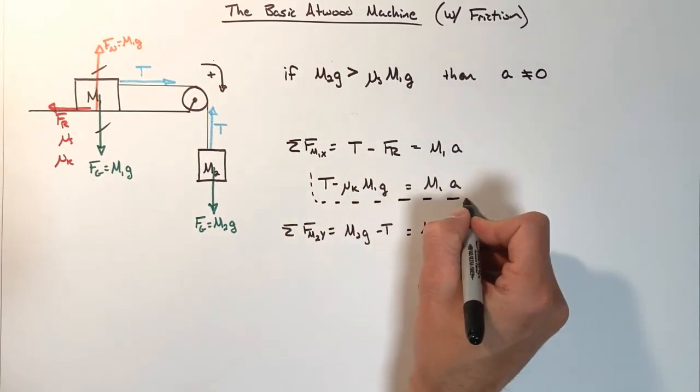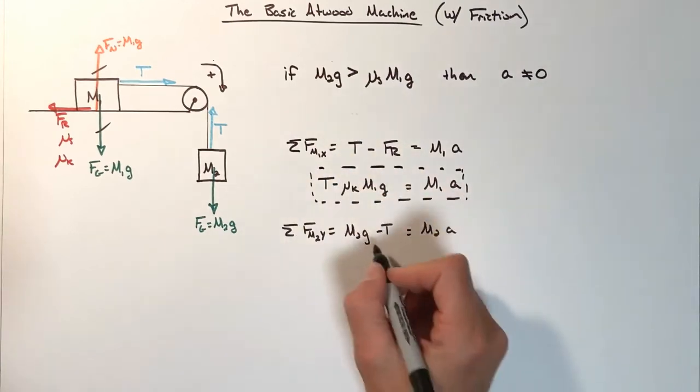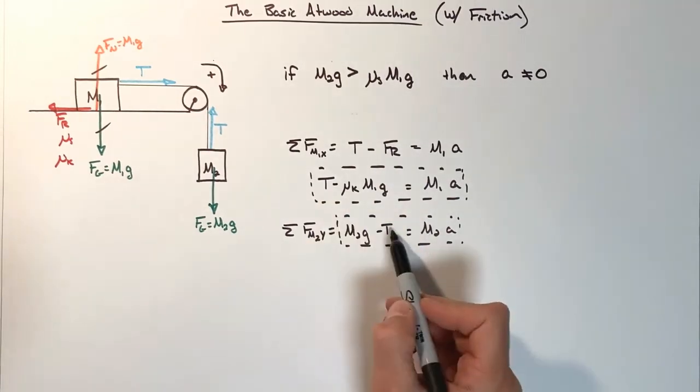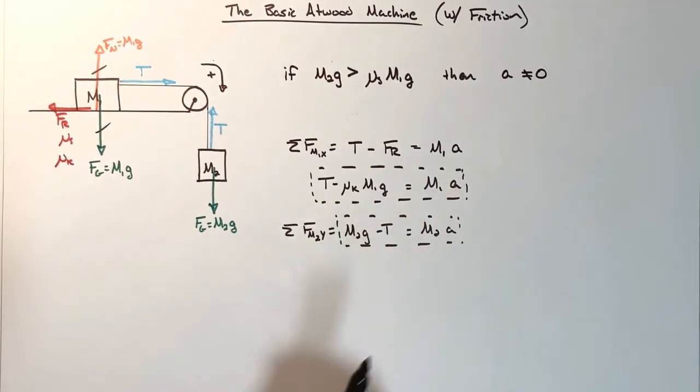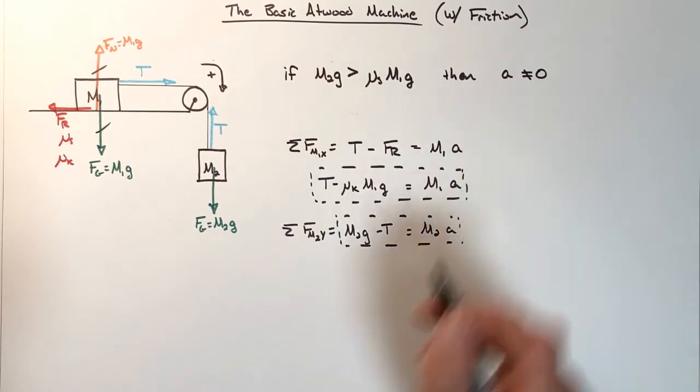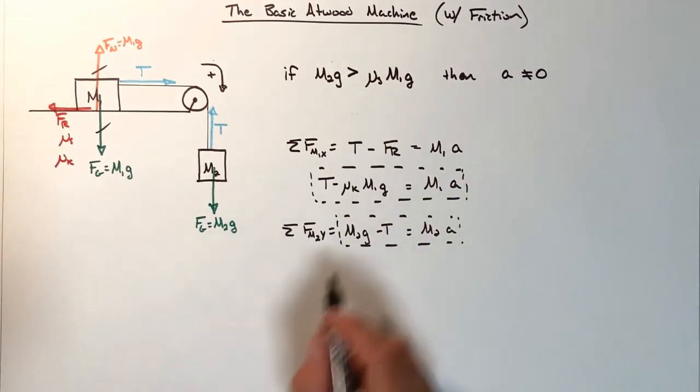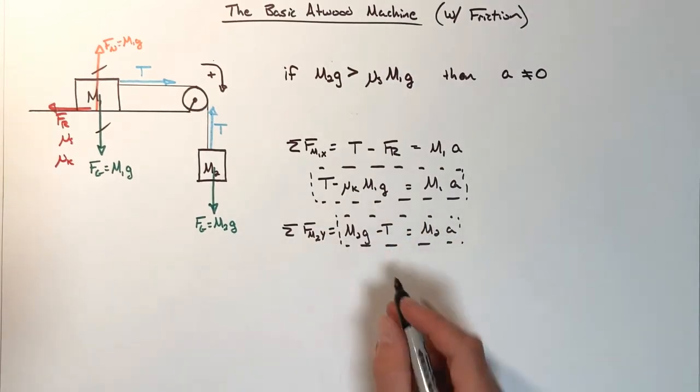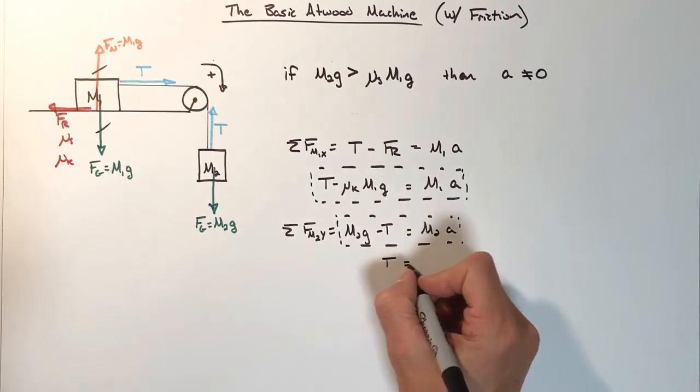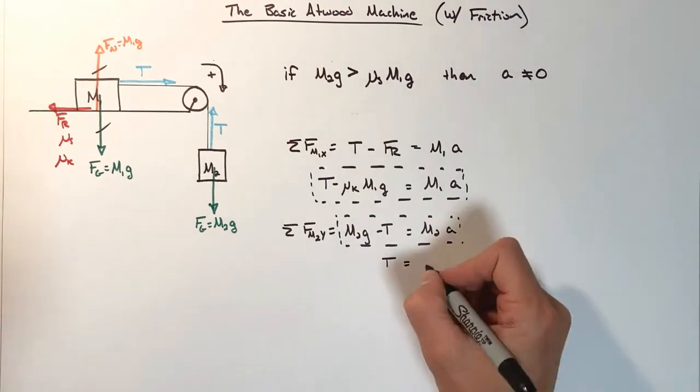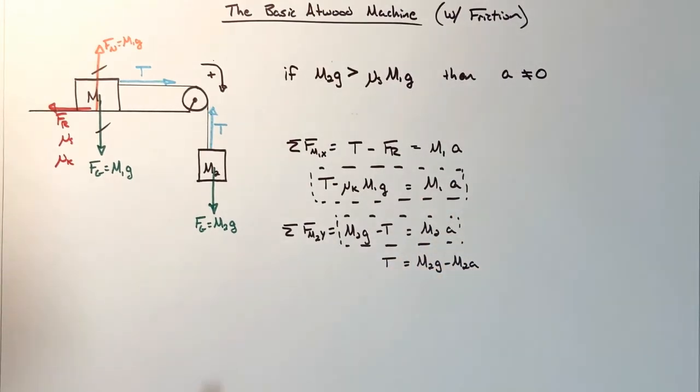And you'll notice, if we look at this, we have one, two equations, with two unknowns. Our two unknowns being the tension of the string, as well as the acceleration. Now, I'm not concerned with calculating the tension of the string at this point. All we're trying to do in this problem is get to the acceleration of the system. So, the easiest way to do this is to rearrange this equation for tension and substitute it in up here. So, in rearranging this, we get tension is equal to M2G minus M2A.